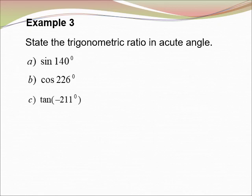Example 3: State the trigonometry ratio in acute angle. A) sin 114°, B) cos 226°, C) tangent(−211°).